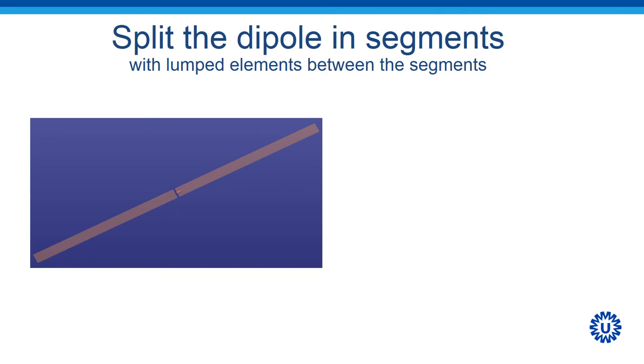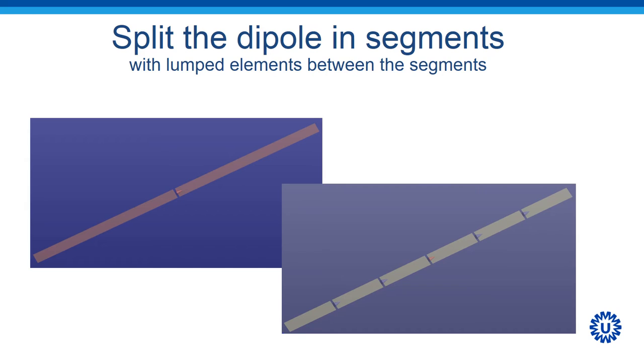How can we improve on this? The idea came to take a dipole antenna and split the legs of the antenna into segments, and then interconnect these segments with lumped elements that could be inductors or capacitors. In a simulation environment, it would look like this.